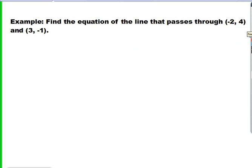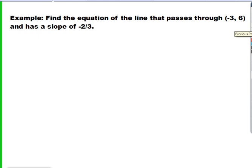There are two more examples on the next two slides. I want you to go ahead and solve each one — you're going to need to pause the video to look at the problem and solve before moving on. The first example is: find the equation of the line that passes through negative 2, 4 and 3, negative 1. Pause the video to solve. The next example is: find the equation of the line that passes through negative 3, 6 and has a slope of 2 thirds. When you're finished with this example, we will check in class.